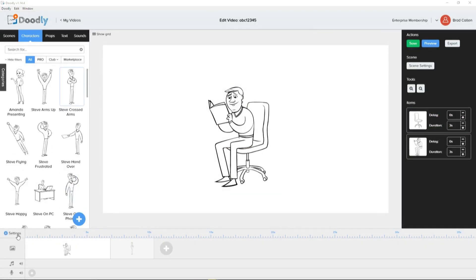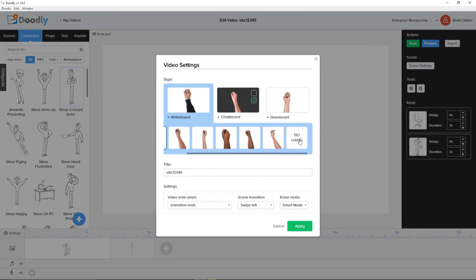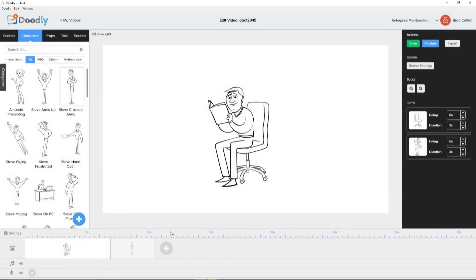Oh, and we have a bunch of really cool settings available, too. Different hands or none at all. Scene transitions with even camera panning. And our smart erase mode, as well, to continue to provide the realistic feel that you're looking for.